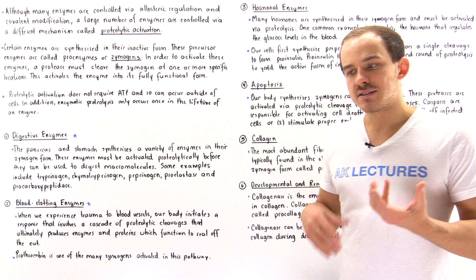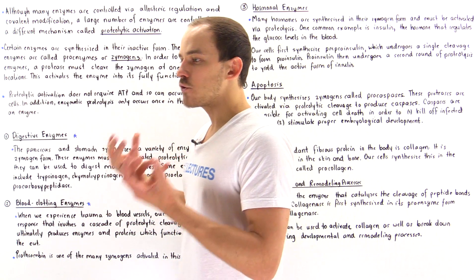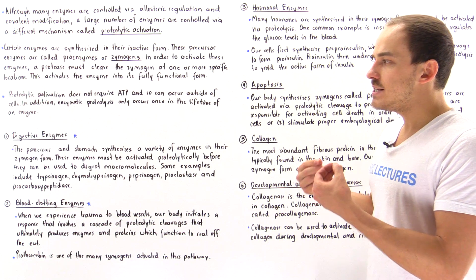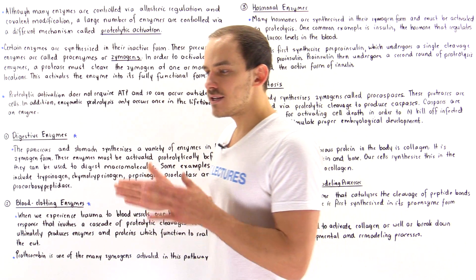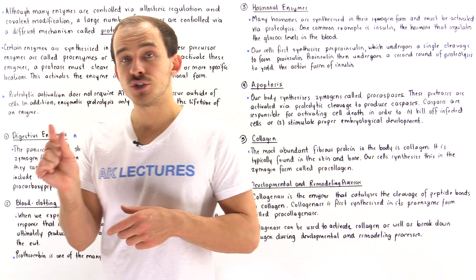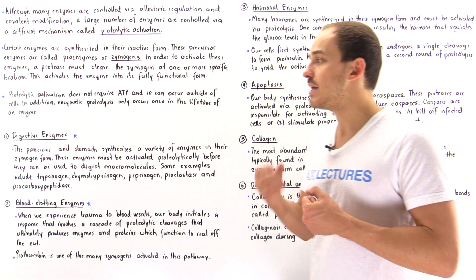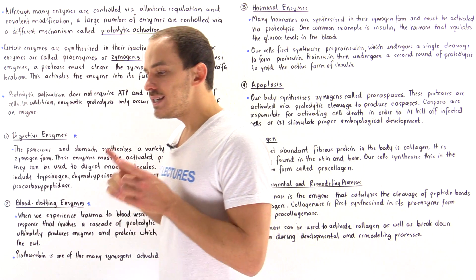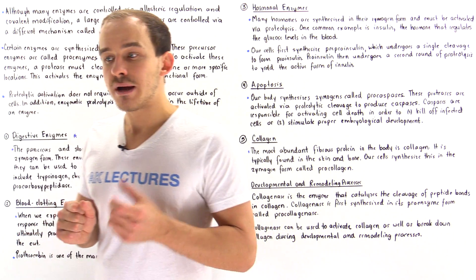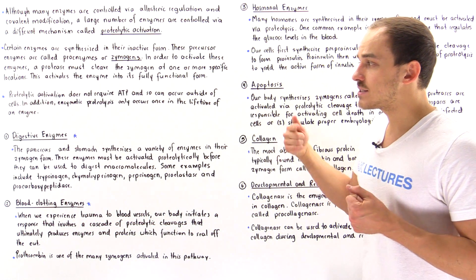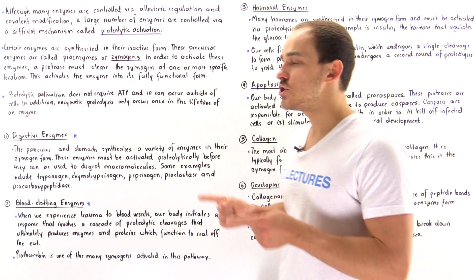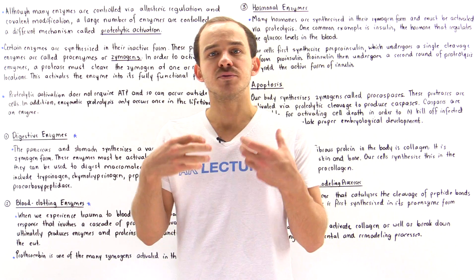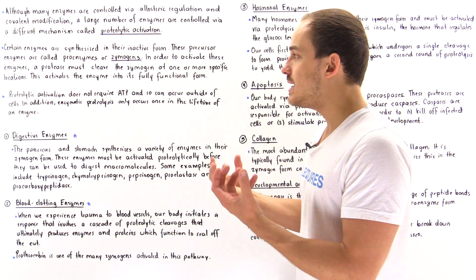Whenever we ingest different types of food particles — macromolecules such as proteins, carbohydrates, and lipids — it's the function of digestive enzymes to break down these large macromolecules into smaller particles that can be taken up by individual cells. These digestive enzymes are initially created in their zymogen form, which is important because we don't want them activated at all times — only when we're actually digesting food.